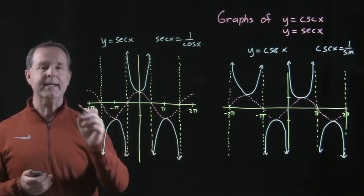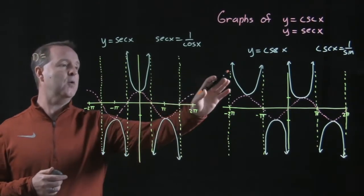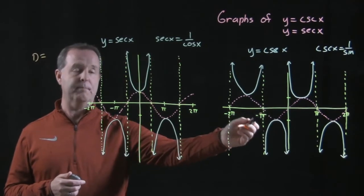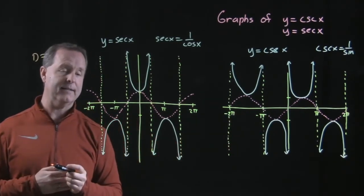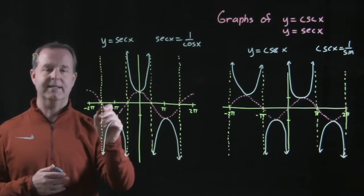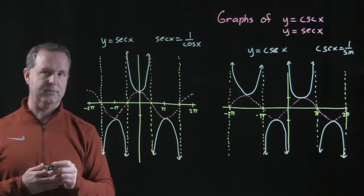The domain of both of these, the domain of my cosecant are all values except for the integral multiples of pi, that's where the vertical asymptotes are at. With the secant one, the domain are all values of x, except for the half marks of pi. Those are where the vertical asymptotes are at.